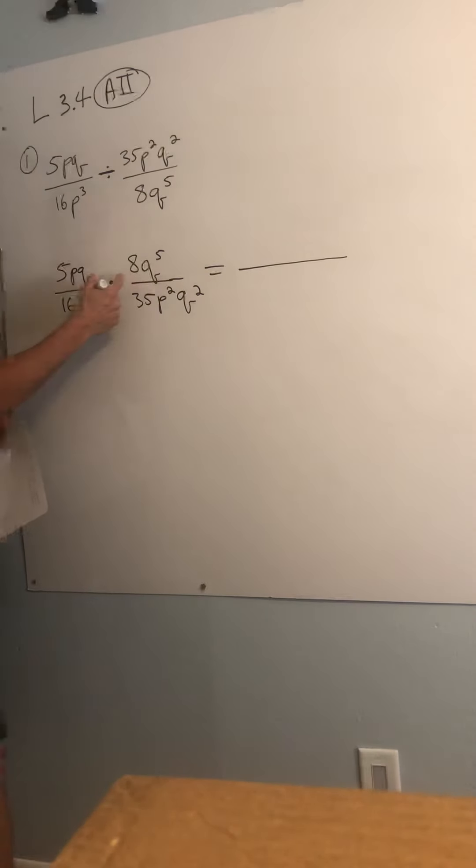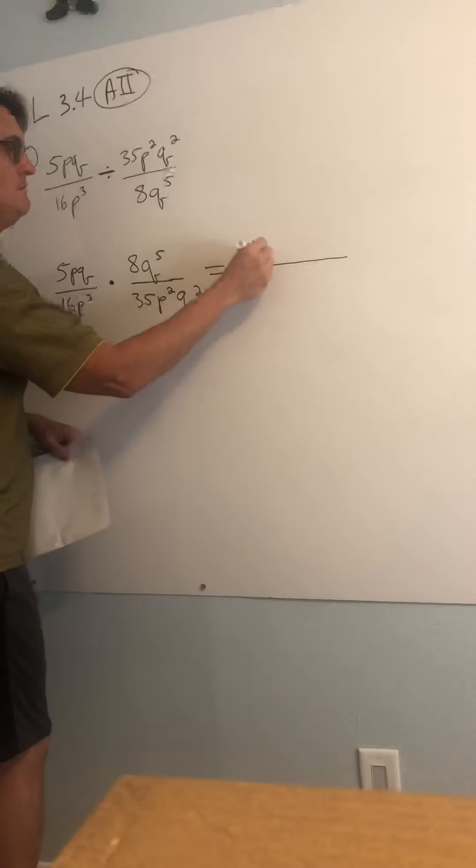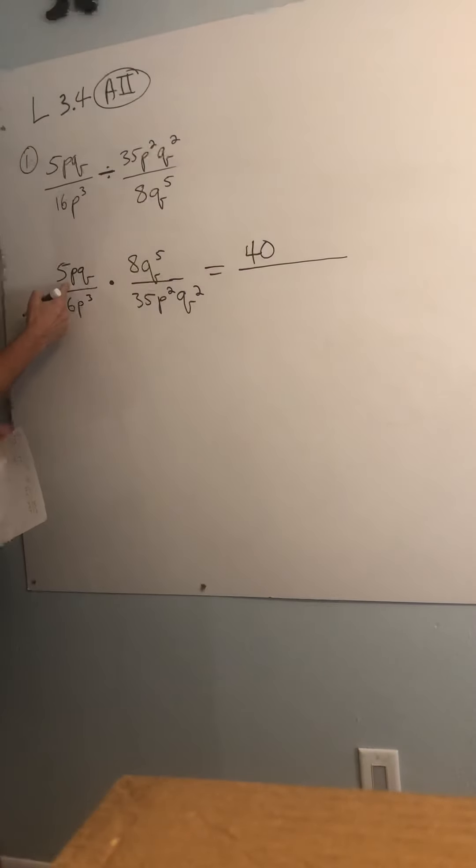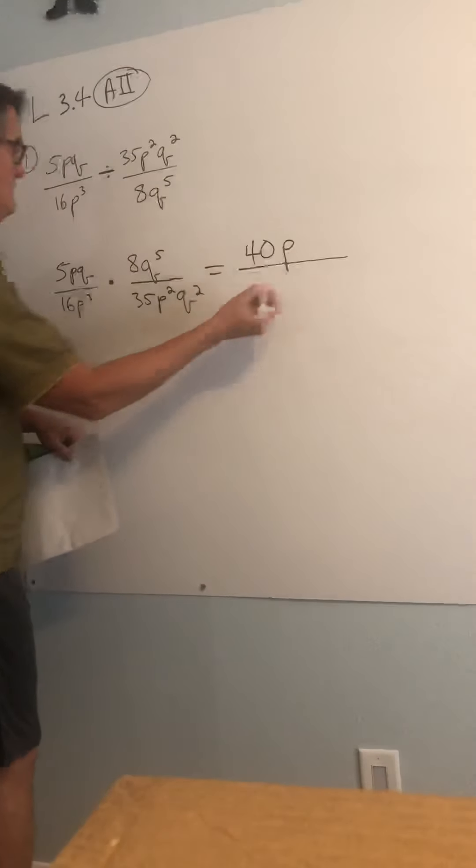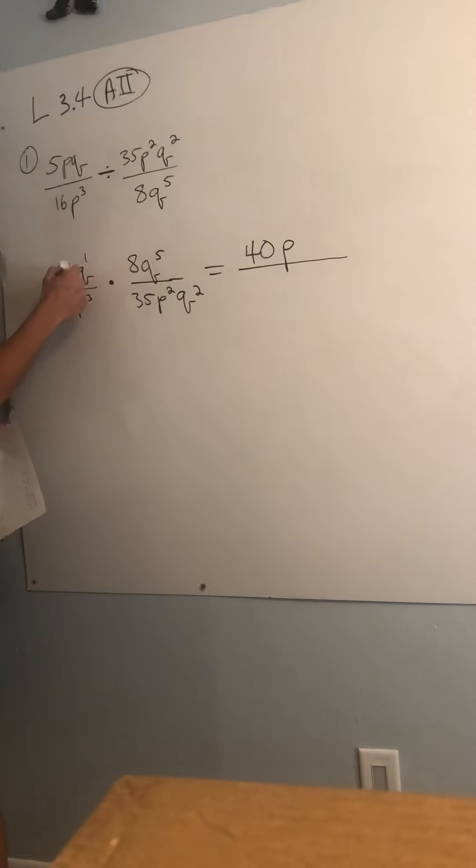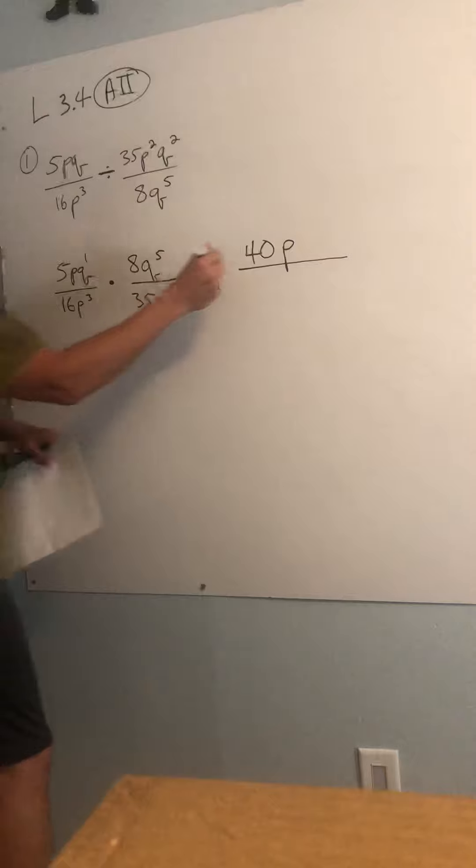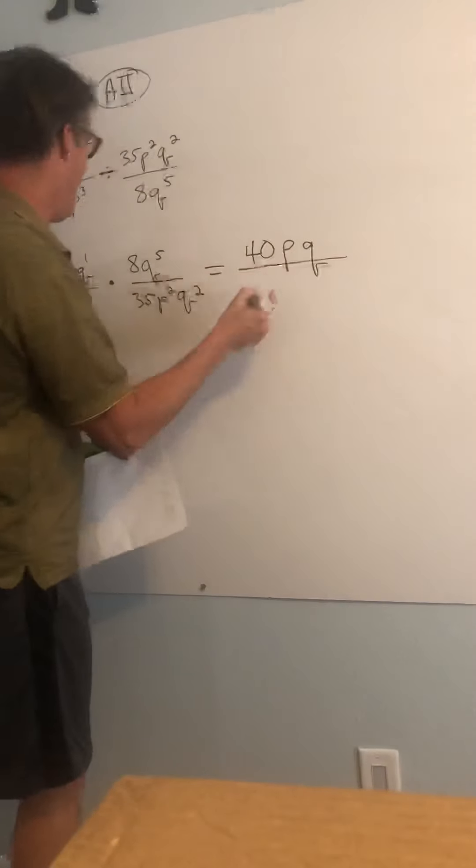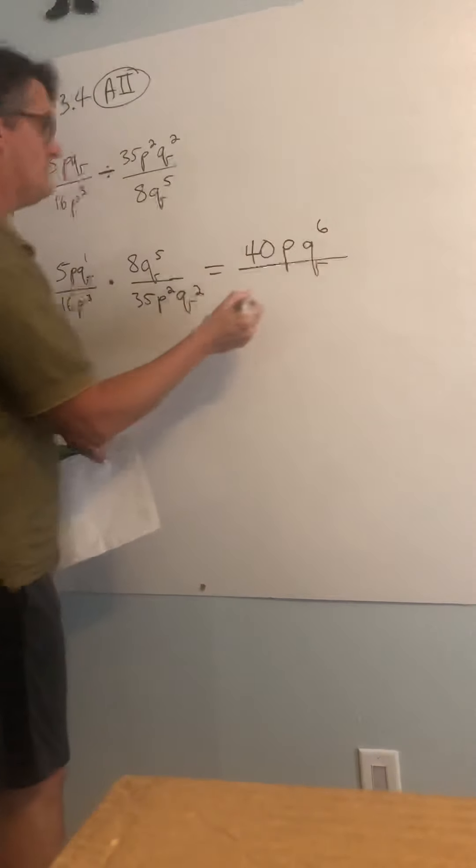Coefficient times coefficient, 5 times 8, 40. P, no other factor of P over here, so I'm just going to write it down. Q to the first times Q to the fifth, you're going to keep the Q, add the exponents, 1 plus 5 is 6.